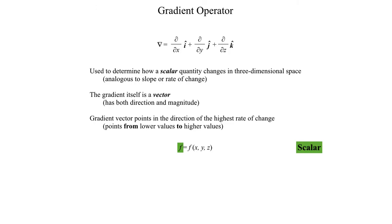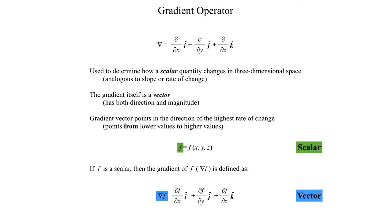If we take a look at an example scalar function f — highlighted in green to signify it's a scalar — and we want to calculate the gradient of that scalar function, written as this upside-down triangle followed by the name of the scalar function, the gradient of f is defined as the partial derivative of f with respect to x multiplied by the i-hat unit vector, plus the partial derivative of f with respect to y multiplied by the j-hat unit vector, plus the partial derivative of f with respect to z multiplied by the k-hat unit vector. That entire quantity is the gradient of our scalar function f. Note that f itself is a scalar with only magnitude, while the gradient of f, highlighted in blue, is a vector quantity with both magnitude and direction.